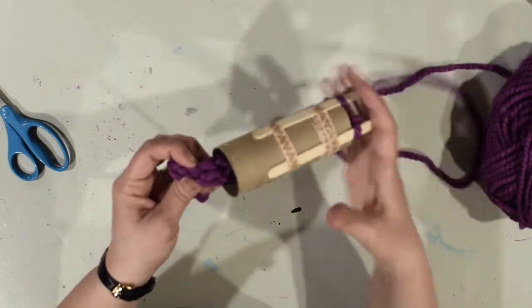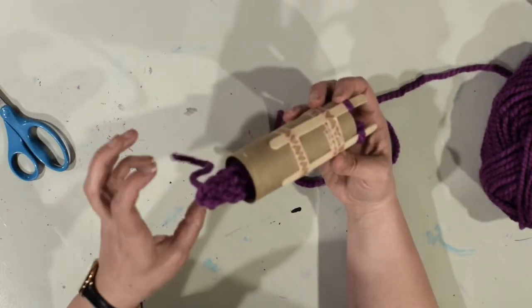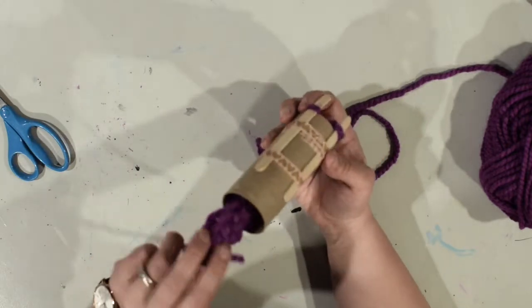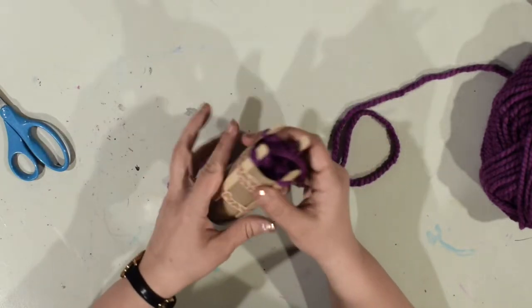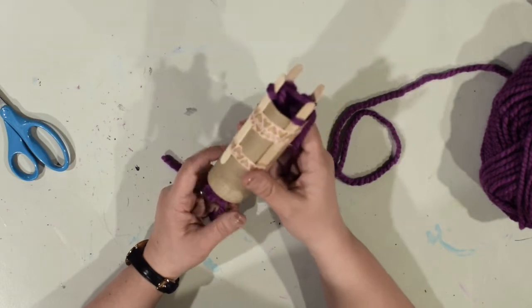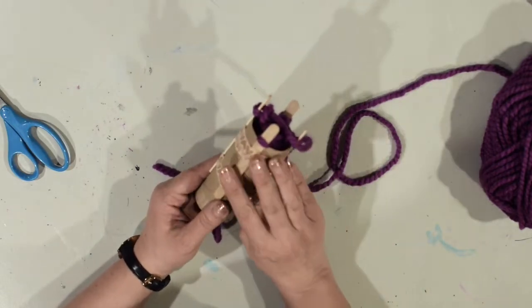After a few minutes you'll start to see the tail of your knitting coming out, so that looks good. Now I'm going to keep going and I'll come back and show you what to do when it's time to take your knitting off of your spool.